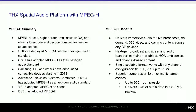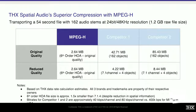MPEG-H goes all the way up to 22.2 if someone wants to mix in that format. It has superior compression — up to 600 to 1 in compression ratio using ambisonics, and about 400 to 1 in non-ambisonics mode. Roughly one gig of data gets reduced to 2.7 megabytes. As an example, we took a 54-second file with 162 audio stems — a trailer — at 24-bit 48k, roughly 1.2 gigs. After compression it's down to 2.64 megabytes. Other codecs like 7.1.4 are double the size at reduced quality.